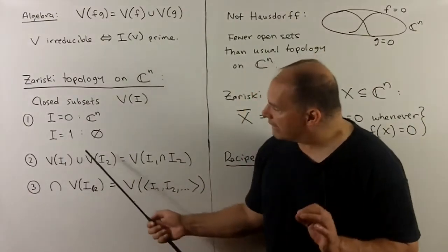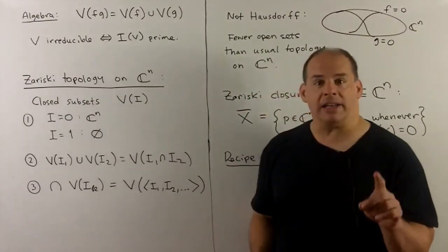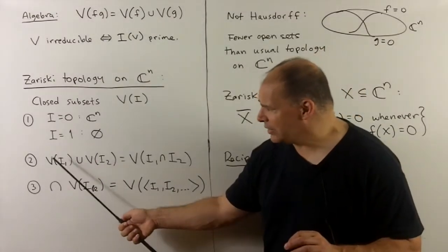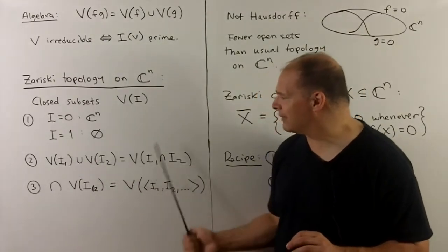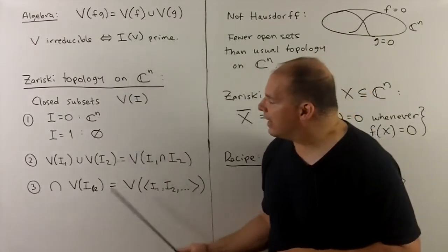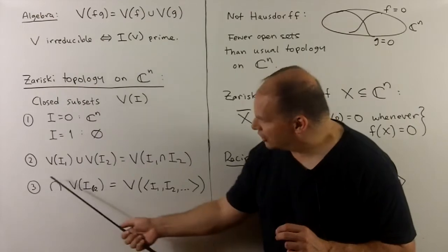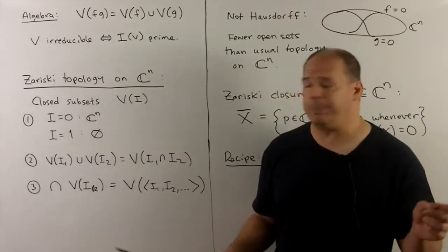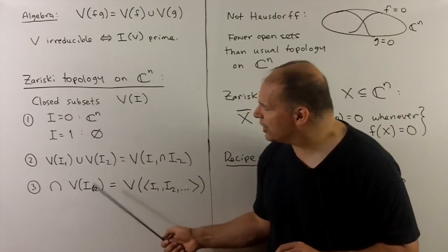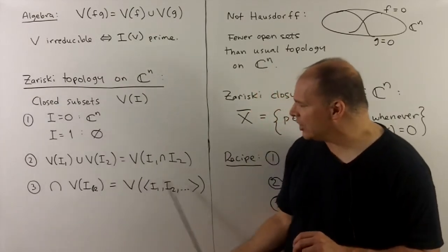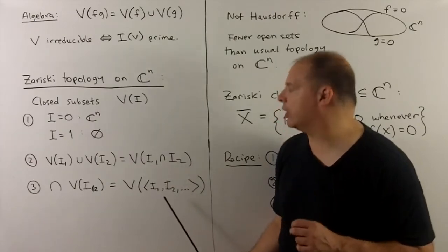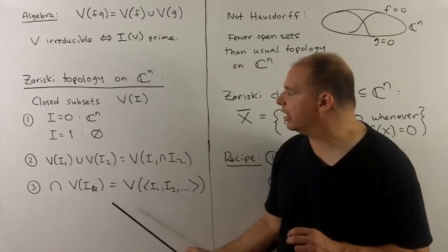We also want finite unions of varieties to also be varieties, and that'll happen because if we take the varieties for two ideals, take their union, that's just the variety of the intersection, and so on. Then if I want arbitrary intersections of closed sets to be a closed set, we know if I take an arbitrary intersection of varieties, we're just going to take the variety for the ideal generated by all of their ideals, so you need to show that, and so we get a topology here.